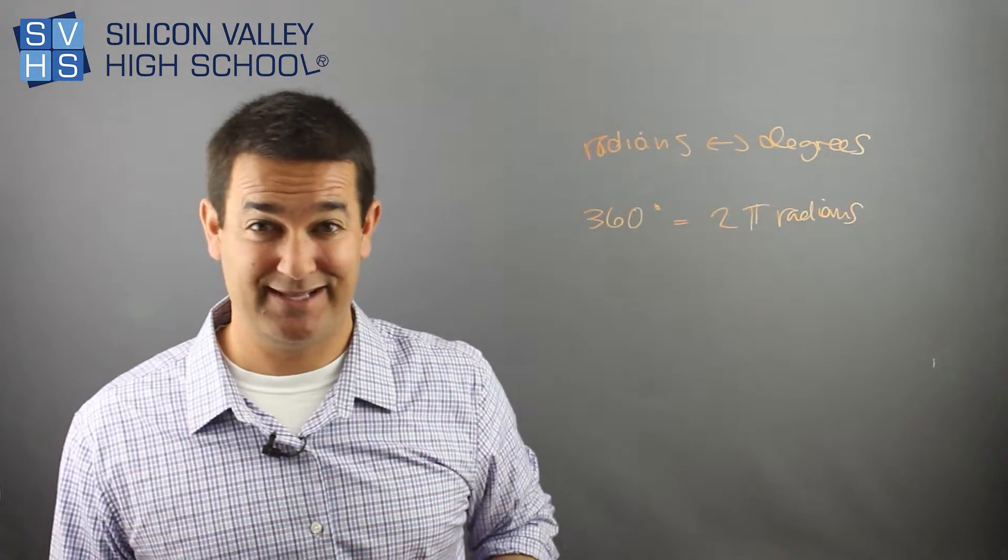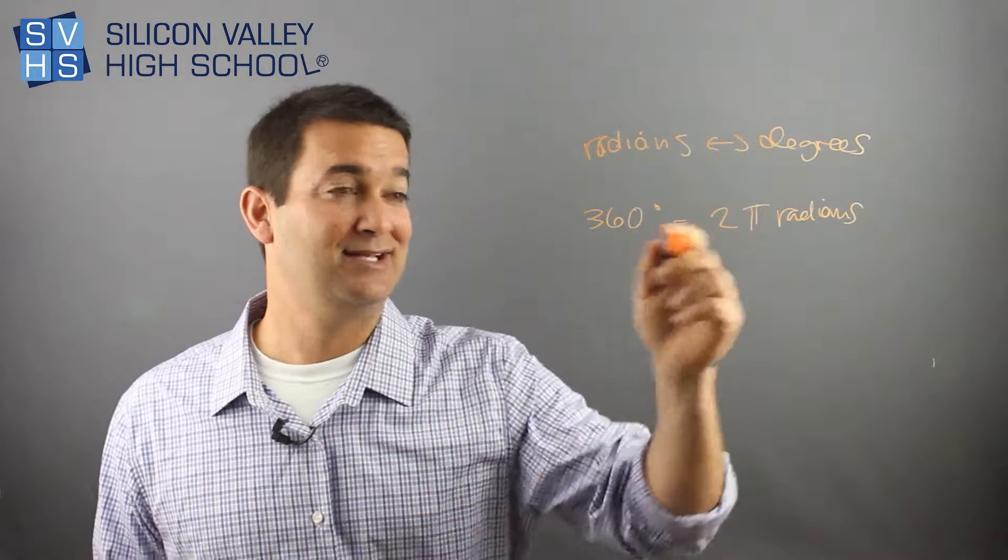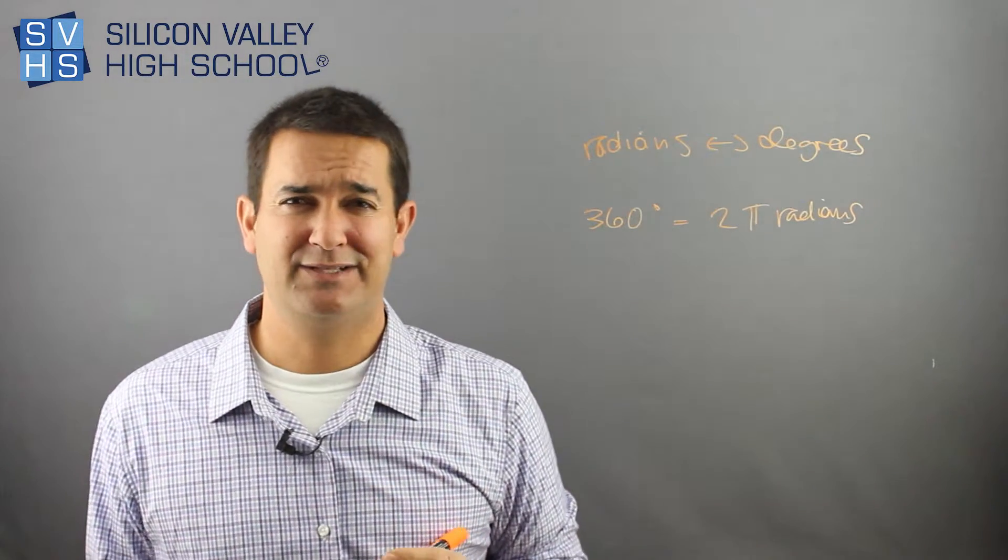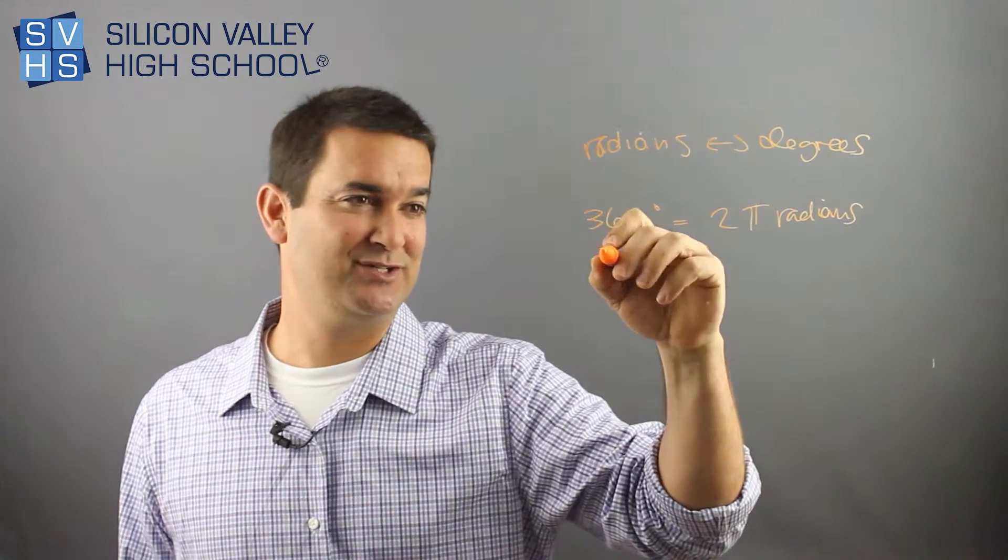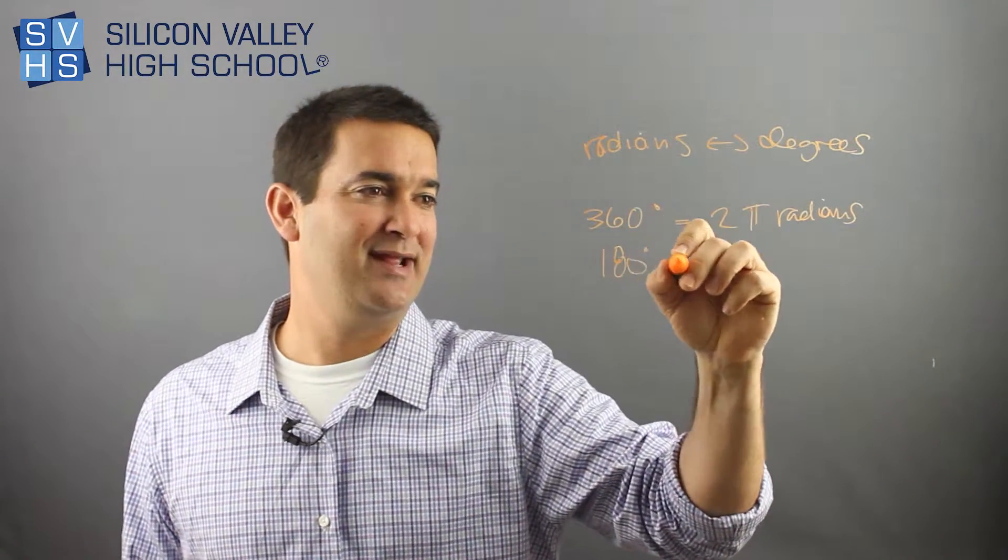So actually, it would be totally accurate to name your new skate trick a 2 pi. Like, oh, I just did a 2 pi. And actually, a lot of skaters will do half a circle, half a spin, which is a 180, right? 180, well, that's a pi. So pi radians.